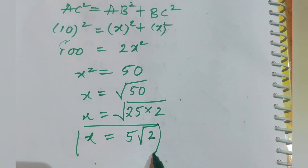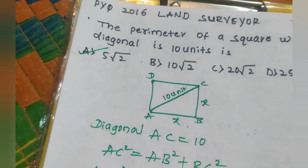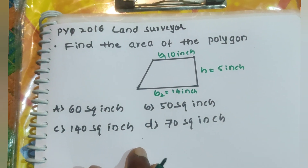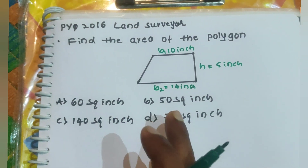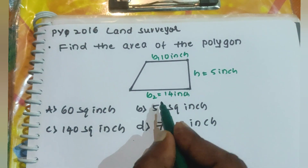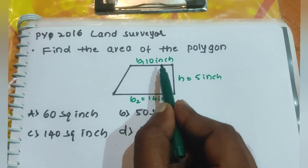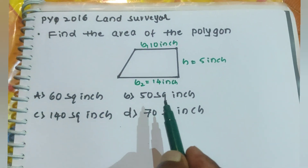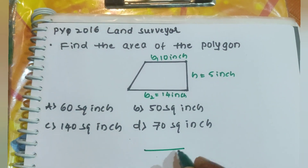The answer is 5√2 — that option is correct. Now the second question, also a previous year 2016 land surveyor question: find the area of the polygon. The figure is given with b1 = 10 inch, b2 = 14 inch, and height = 5 inch.